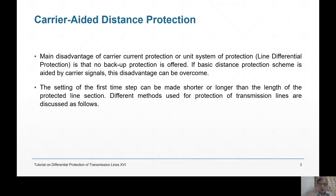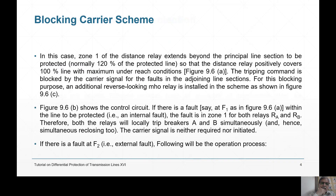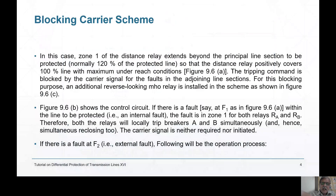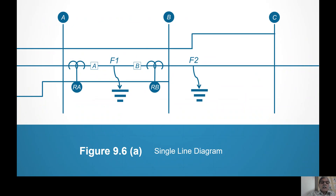The setting of the first zone may be shorter or longer than the length of the protected line section — it will be different as per different methods. Let us discuss the first case. This is a blocking carrier scheme. In the blocking carrier scheme, relays RA and RB are there. Line AB we want to protect. Our main aim is that breakers A and B should simultaneously trip and simultaneously reclose to avoid power system instability.